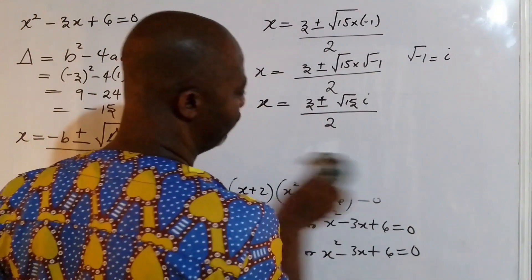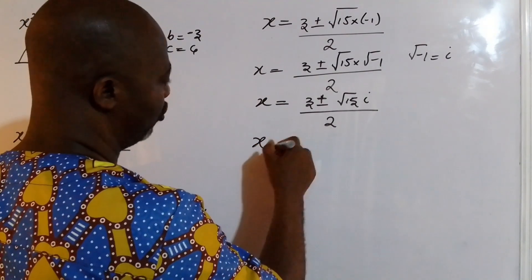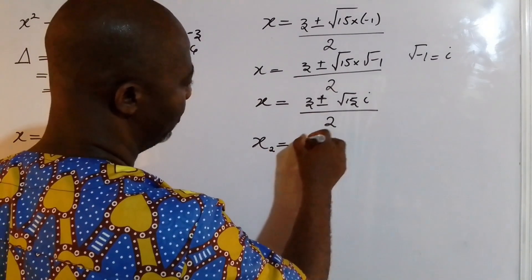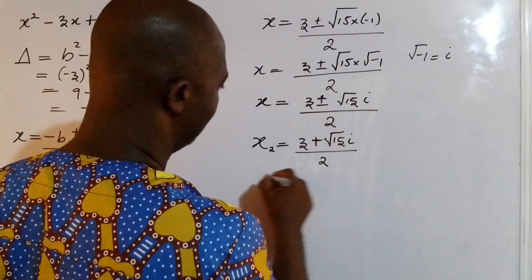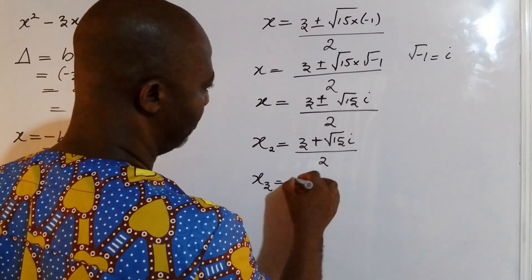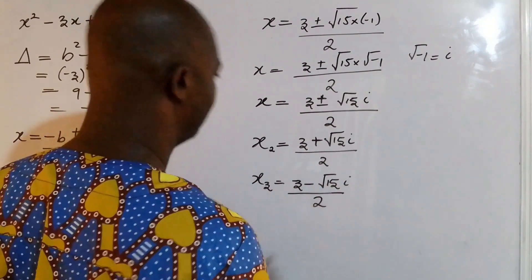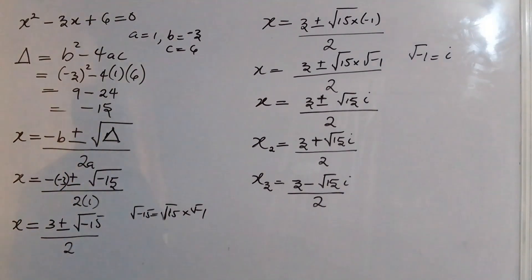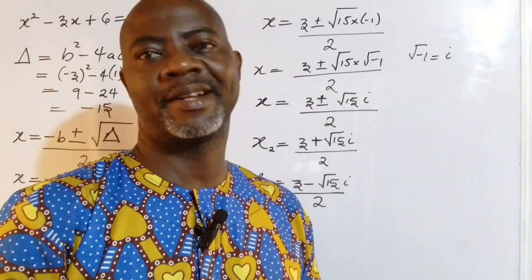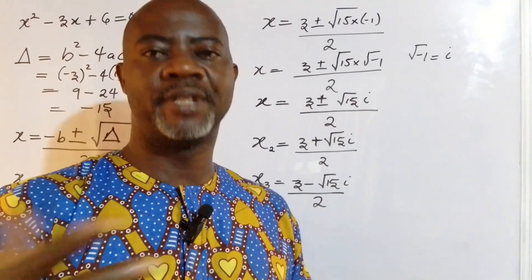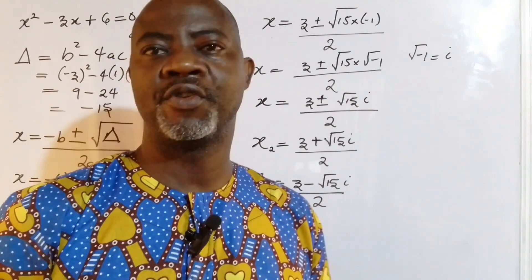So there are two imaginary values. The three values of x are: x₁ = negative 2, x₂ = (3 + i√15) / 2, and x₃ = (3 minus i√15) / 2. Thank you guys for dropping by — watch, learn, subscribe, and please share my videos. Let's grow together, and I'll see you in the next video.